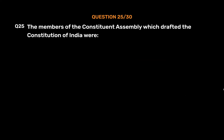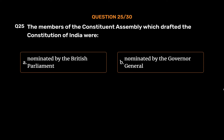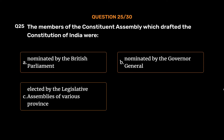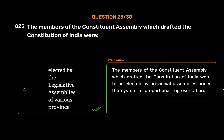Question No. 25. The members of the Constituent Assembly which drafted the Constitution of India were: Option A: Nominated by the British Parliament. Option B: Nominated by the Governor General. Option C: Elected by the Legislative Assemblies of various provinces. Option D: Elected by the Indian National Congress and Muslim League. The correct answer is Option C: Elected by the Legislative Assemblies of various provinces. The members of the Constituent Assembly were to be elected by provincial assemblies under the system of proportional representation.